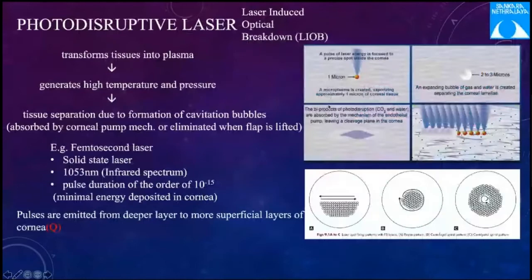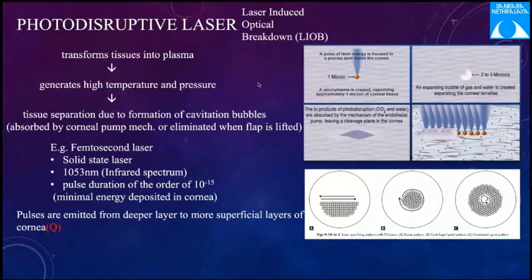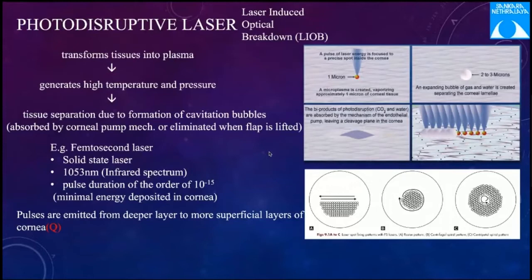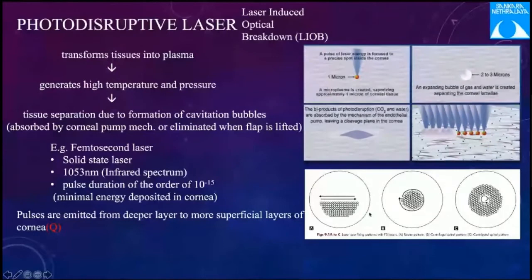The photodisruptive laser uses a highly focused beam thrown onto the cornea, resulting in plasma formation which expands rapidly, separating tissue planes and forming cavitation bubbles. These bubbles are absorbed by the corneal pump mechanism or eliminated when the flap is lifted — known as laser-induced optical breakdown. The femtosecond laser is a solid-state laser emitting at 1053 nm in the infrared spectrum, with pulse duration of 10 to the power of minus 15 seconds, depositing minimal energy. Pulses are emitted from deeper to more superficial layers; three patterns include raster, spiral-out, and spiral-in. The spiral-in pattern maintains centration with the laser light until the very end of the disruptive procedure.